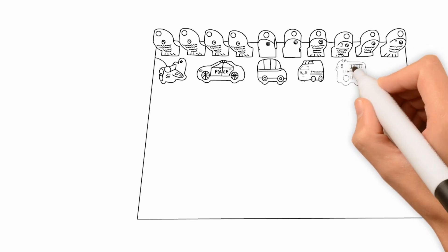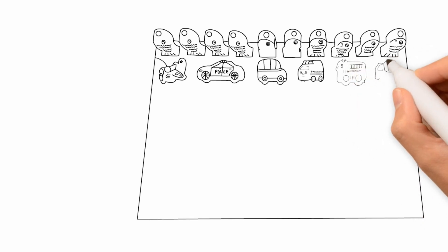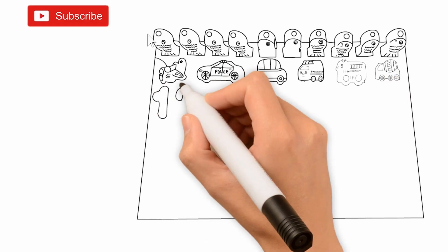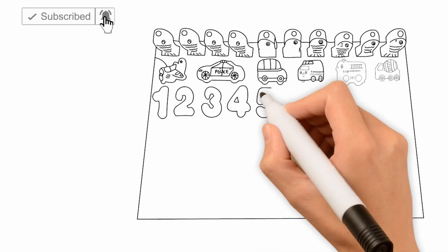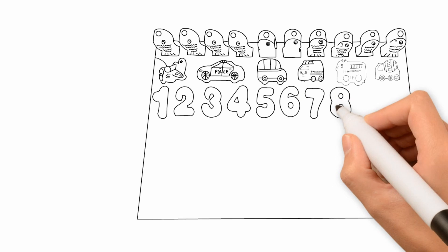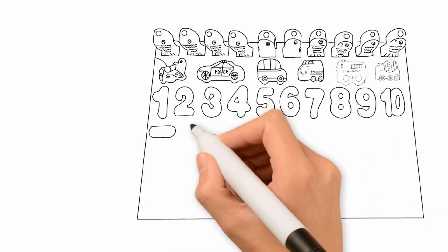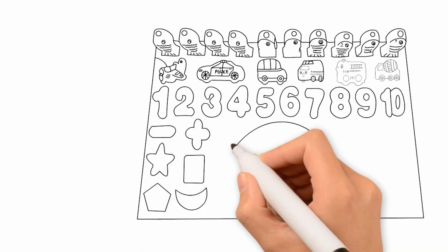Here's a fire truck, red and bright. And a cement lorry, heavy with might. Do you know, cars come in many forms. Electric cars now lead the norms. Planes can fly across the seas, bringing us to places with ease.